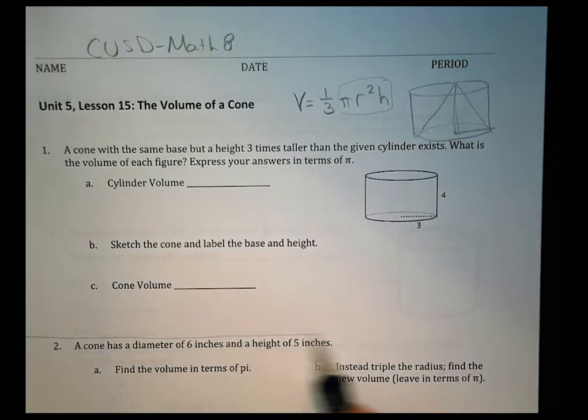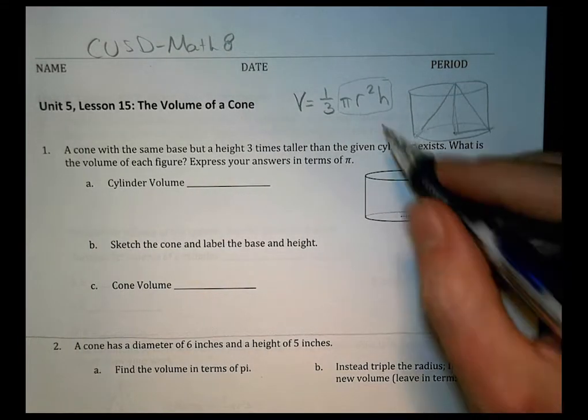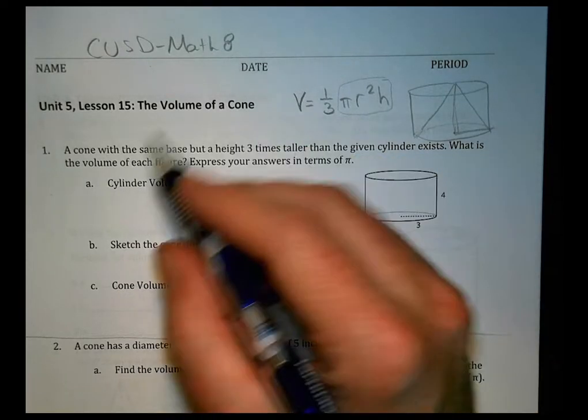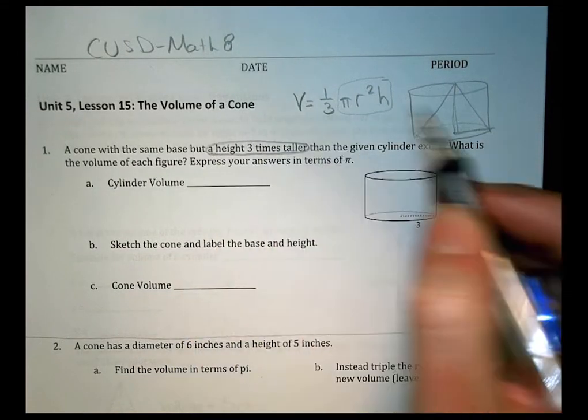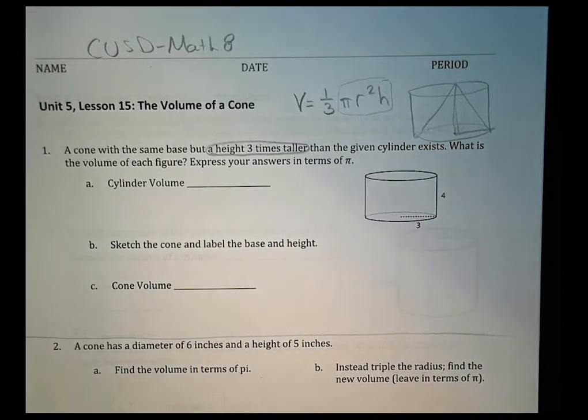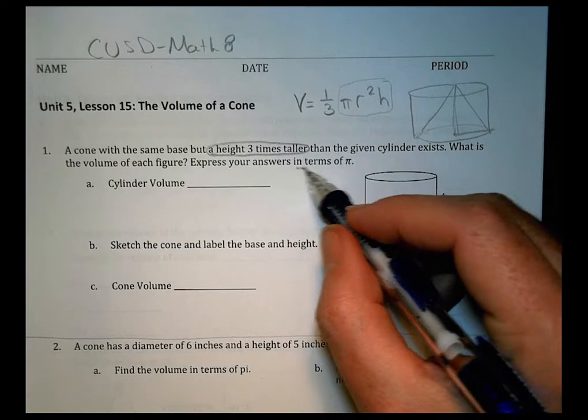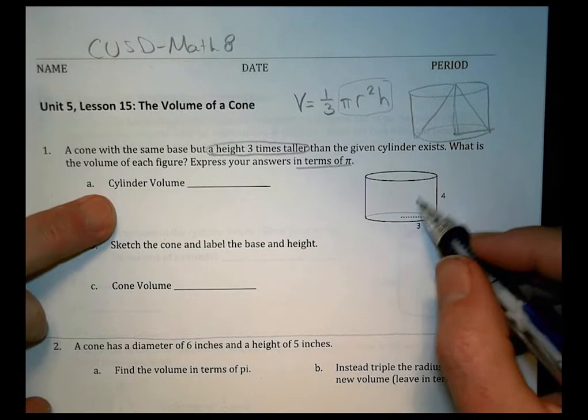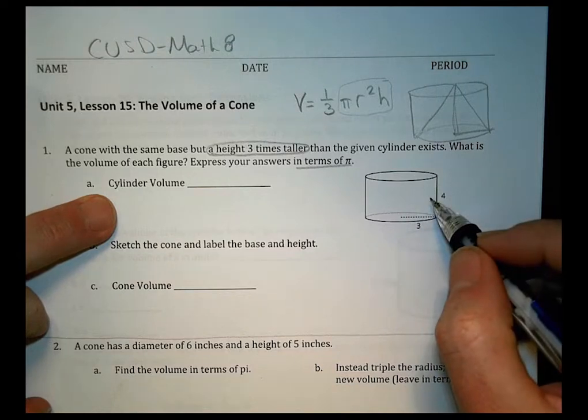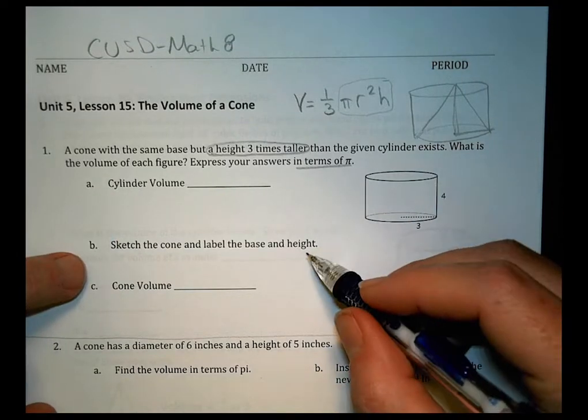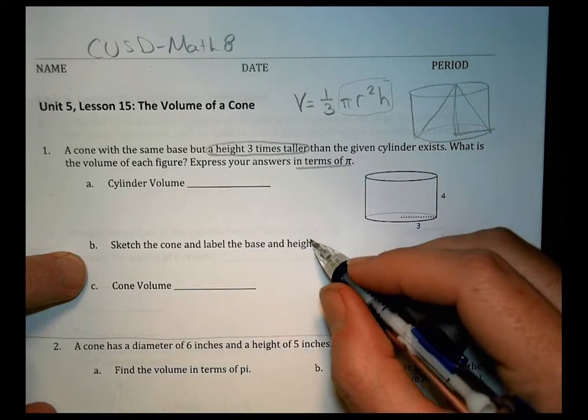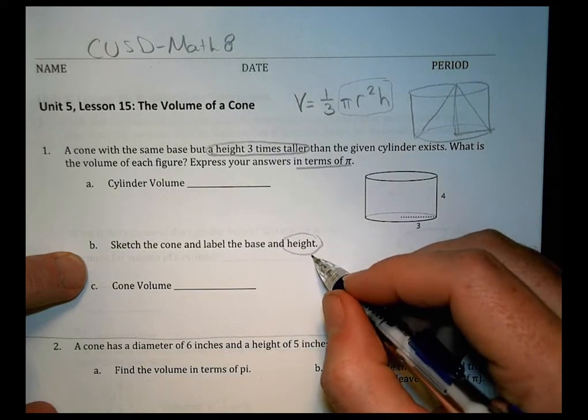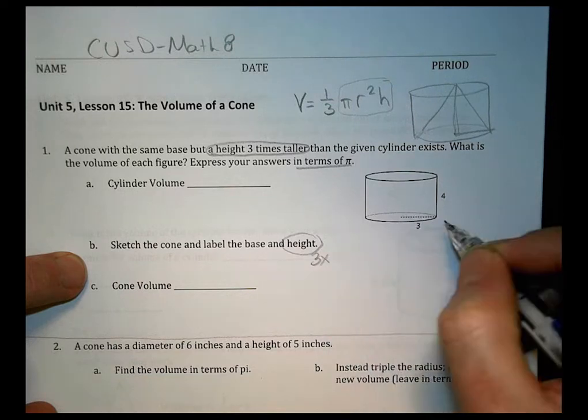So on your first question, which is your cool-down question from the lesson today, they want you to kind of explore this idea. It says a cone with the same base but a height 3 times taller than the given cylinder exists. What is the volume of each figure? Then you're going to do it in terms of pi. So we'll find just the cylinder volume just like it is. And then I want you to sketch the cone and label the base and the height. Now remember the cone has a height that is what? What did it say? 3 times as tall as what's over here.